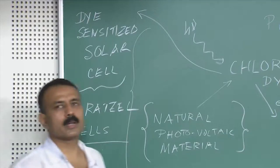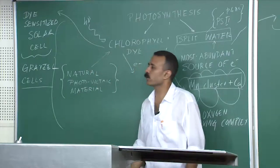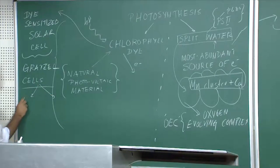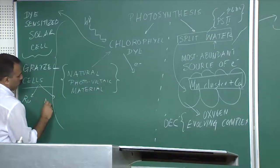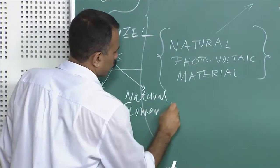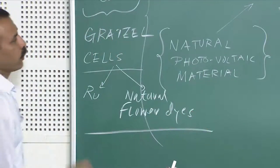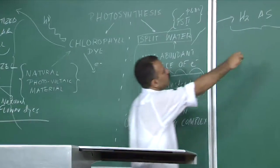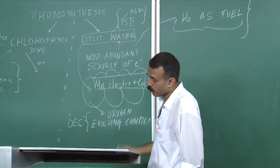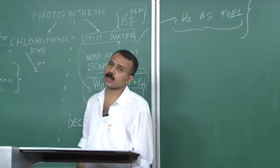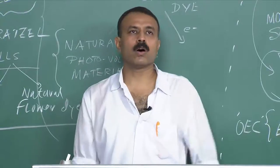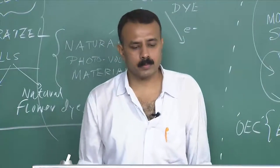We have a totally separate lecture on Grätzel cells or dye-sensitized solar cells — what the different dyes are. In that lecture you will come across ruthenium dyes and natural flower dyes, and so forth. Today we will be talking about hydrogen as a fuel by mimicking or deriving inspiration from the manganese cluster, which is present in photosystem 2 of the thylakoid membrane.